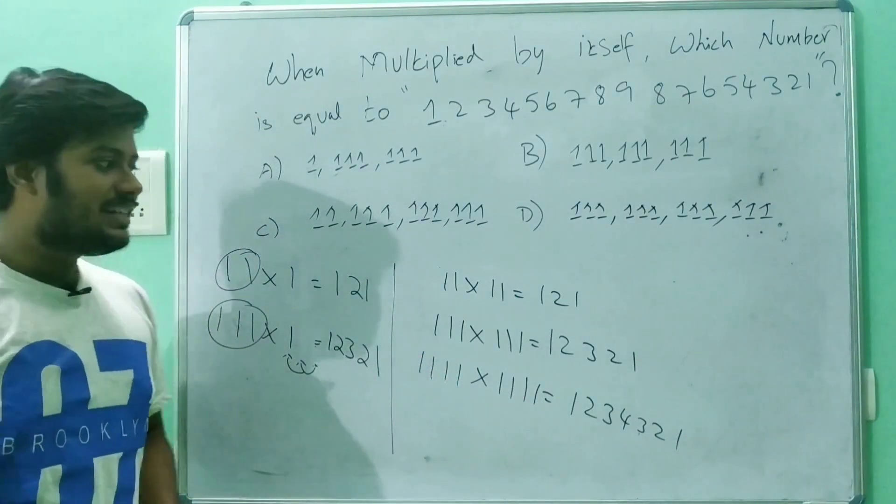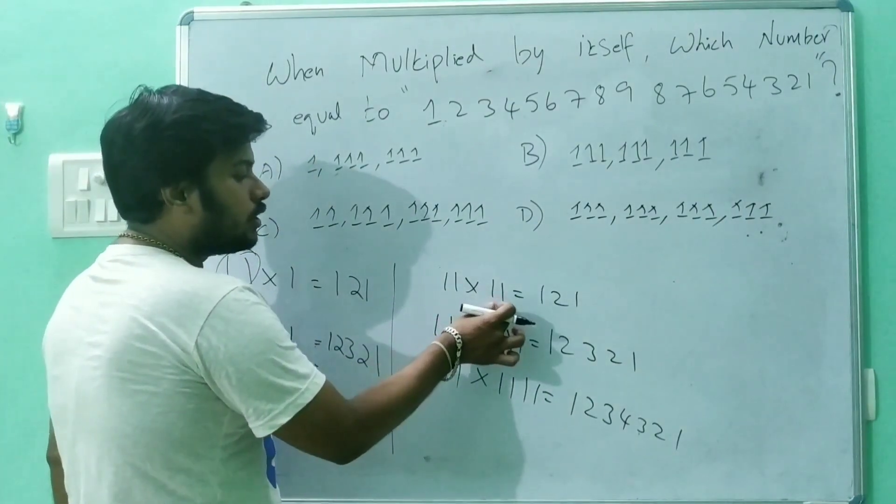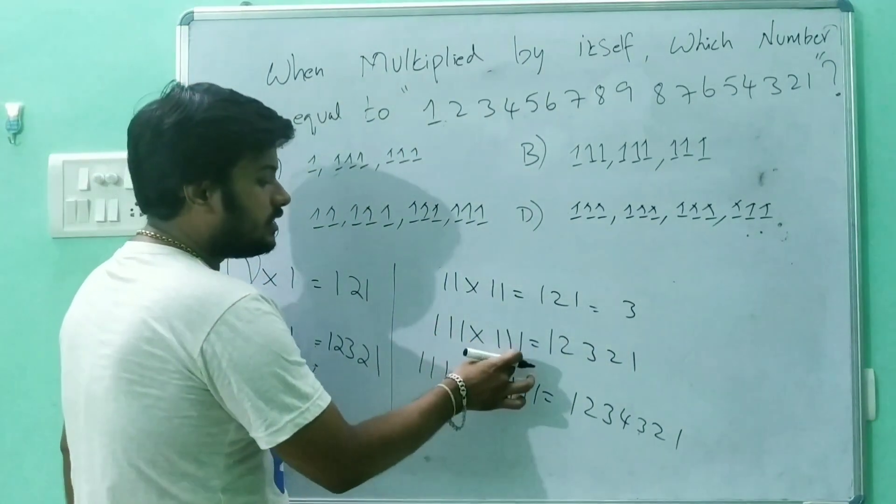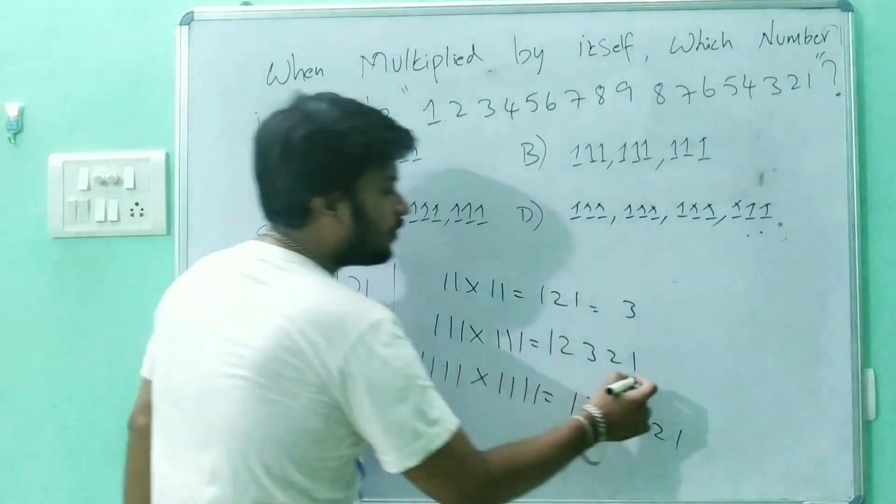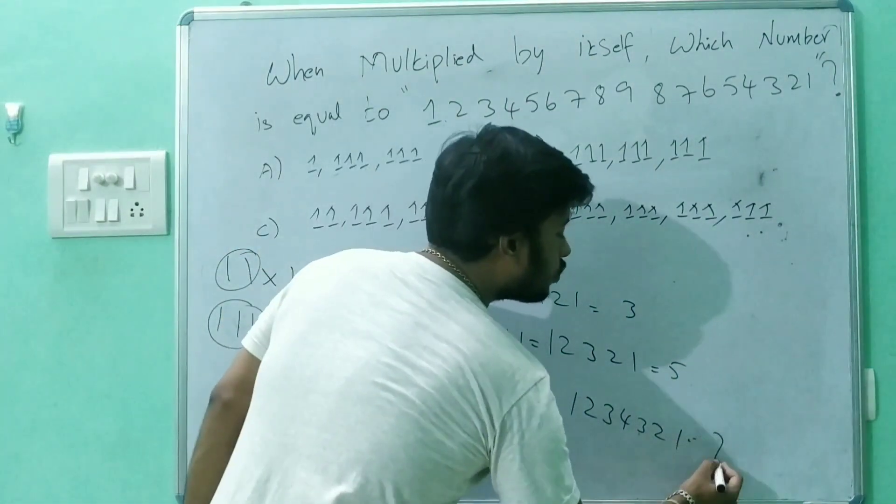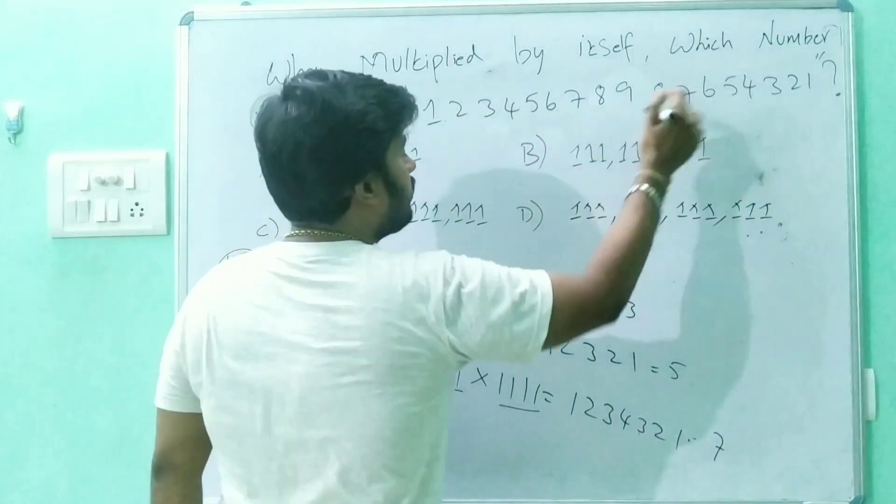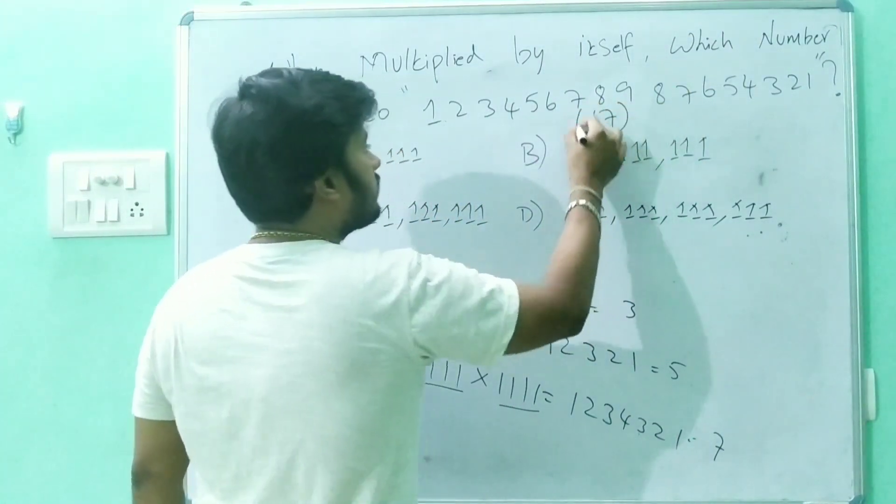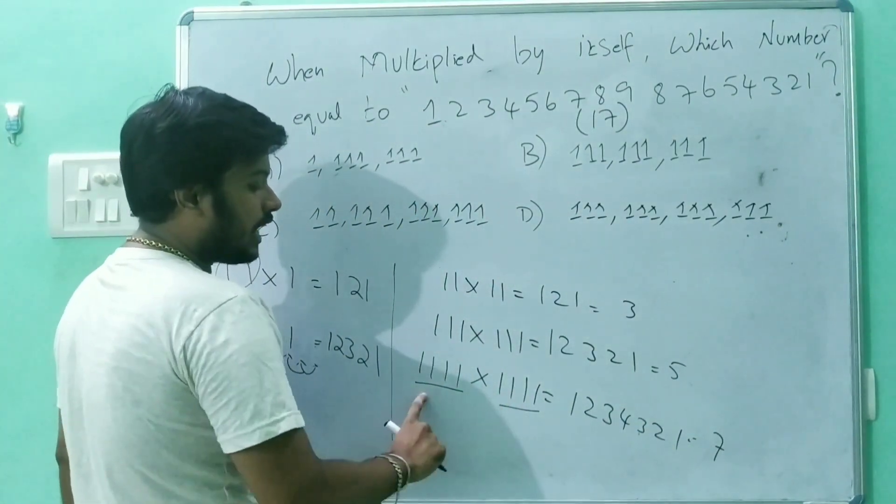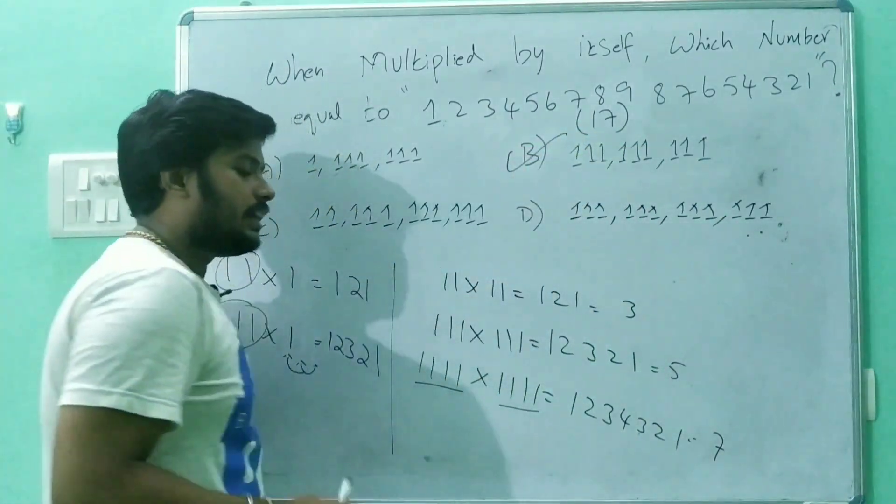Based on this, you can easily answer this problem. If I multiply a two-digit number into a two-digit number like 11 into 11, I get three digits. Three digits into three digits gives five digits. The pattern continues. The total number of digits in the answer is 17 digits. To get 17 digits, I should multiply 9 digits into 9 digits. So this should be my answer.